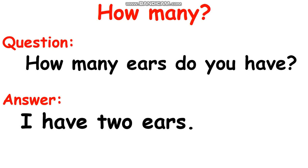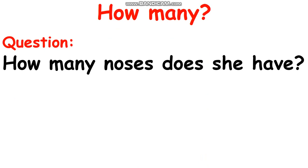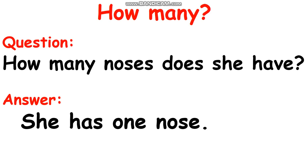Let's see another example: 'How many noses does she have?' We use 'does' here because the subject is 'she'. When the subject is 'she', we use 'does' — but just now the subject was 'you', so we used 'do'. For the answer, it must be 'she', not 'I'. So: 'She has one nose.'